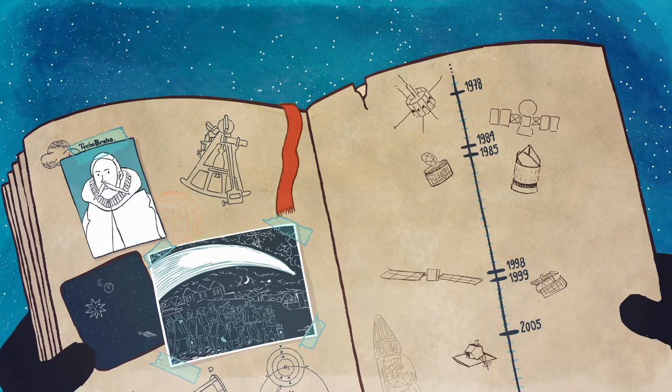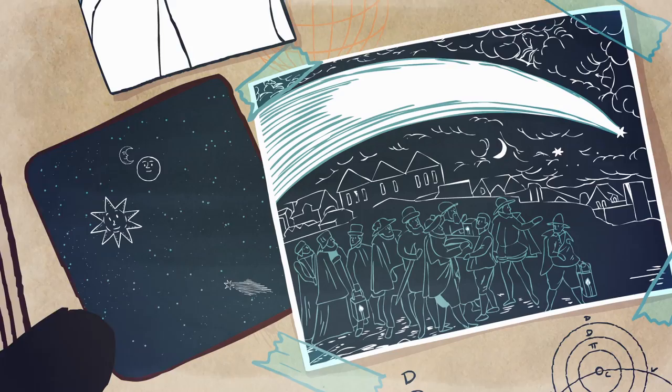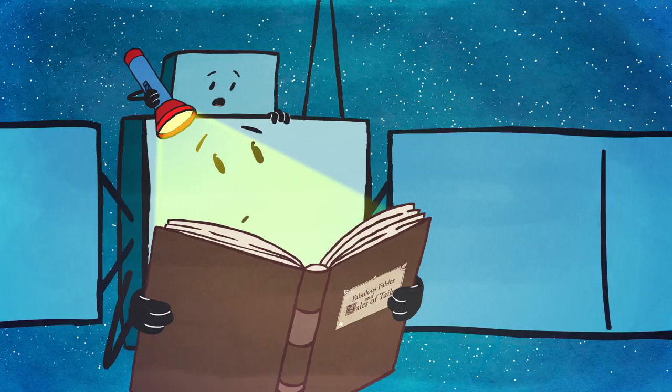Until a Danish astronomer named Tycho Brahe discovered that comets are very far away. Much, much further from Earth than the Moon. How could we learn more about these distant objects? By trying to get close to them.